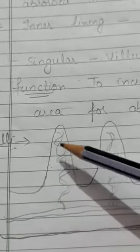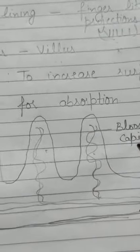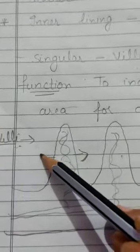These villi have blood streams — curl-like structures which are also called blood capillaries. These tube-like structures are known as blood capillaries. The main function of villi is to increase the surface area for proper absorption of food in the small intestine.